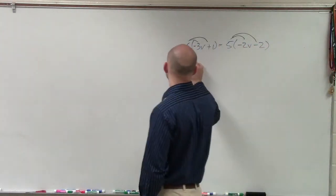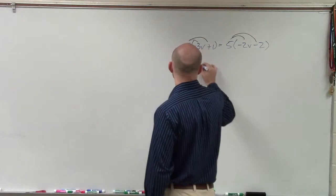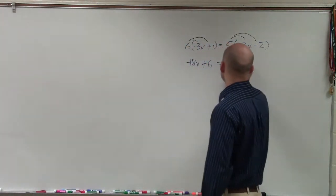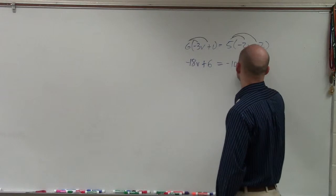Therefore, I have 6 times negative 3B, so negative 18B. 6 times 1 is a positive 6, equals negative 10B minus 10.